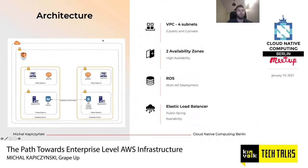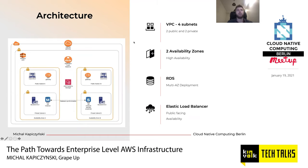In public subnets, we'll host our client application and the NAT gateway, while in our private subnets, we'll host the backend server and RDS database. Our infrastructure will also include an internet gateway to grant access to the internet from our VPC, a public-facing application load balancer for high availability, and we'll use AWS Systems Manager to access our instances.